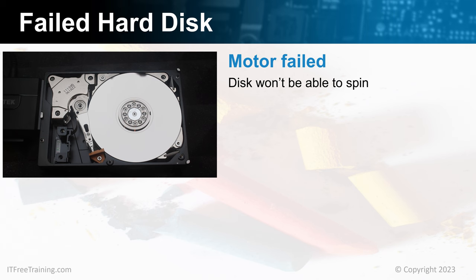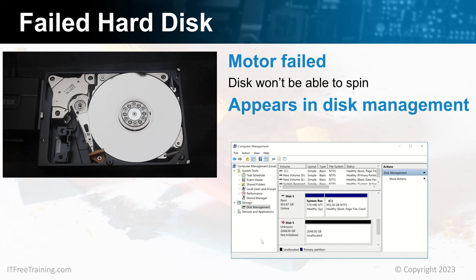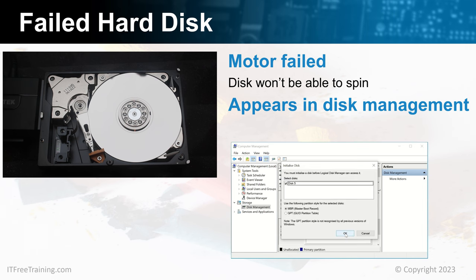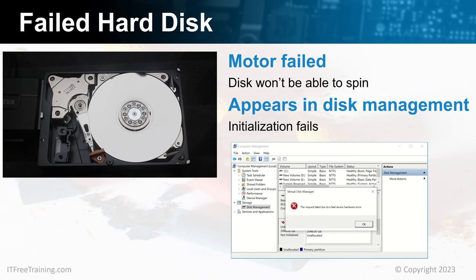You may think a failed hard disk like this won't work at all, but that is not correct. Notice that in disk management, the hard disk has appeared as an unknown disk. When I attempt to initialize the disk, Windows will try to do it and ask which partition table you want to use. Once I press OK, Windows will attempt to initialize the hard disk but will display a fatal device hardware error. If you get an error like this and you can hear the hard disk is not spinning up, the problem is most likely a failed motor or stuck spindle. You can also put your hand on the external case to feel for vibrations.